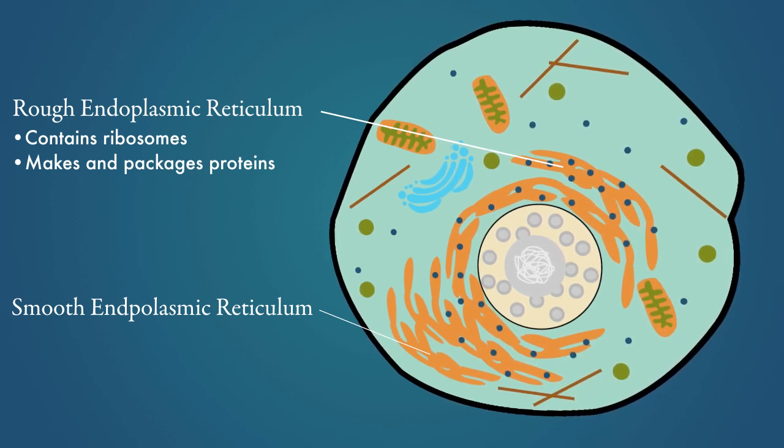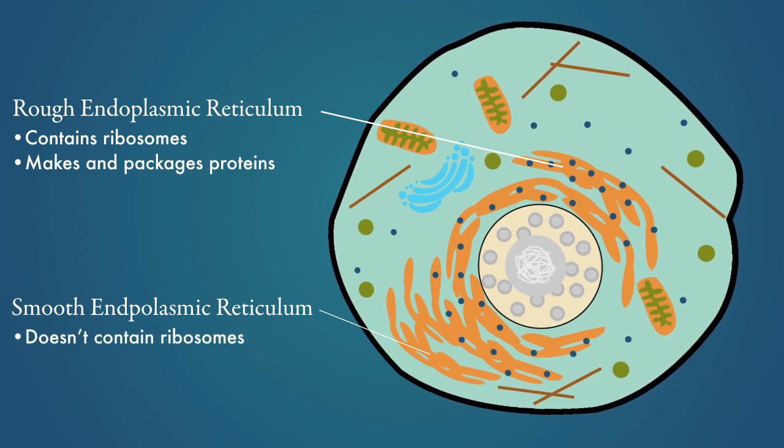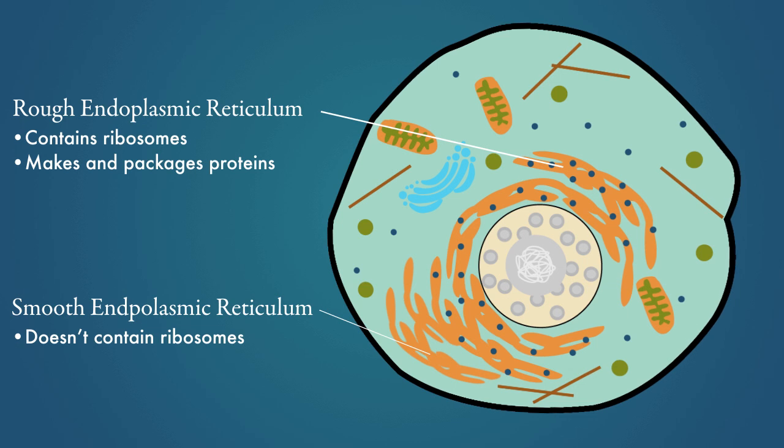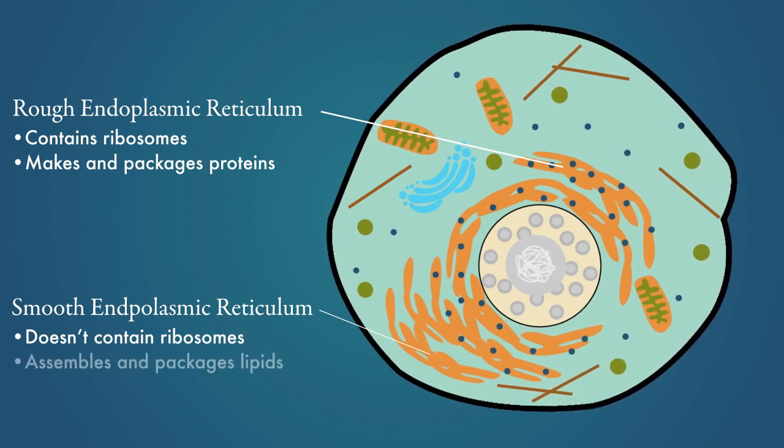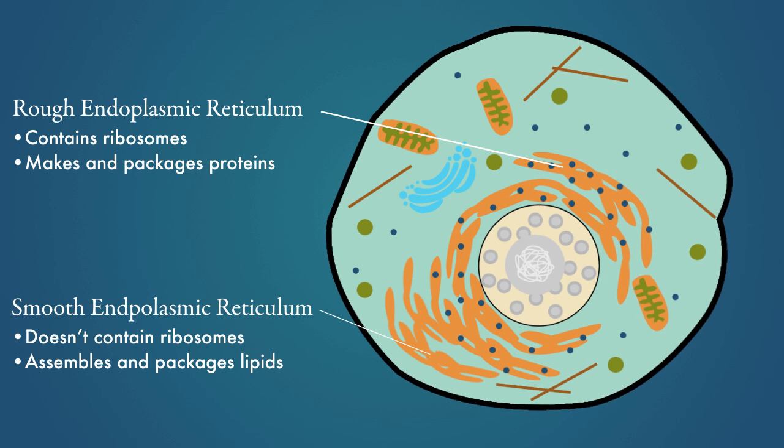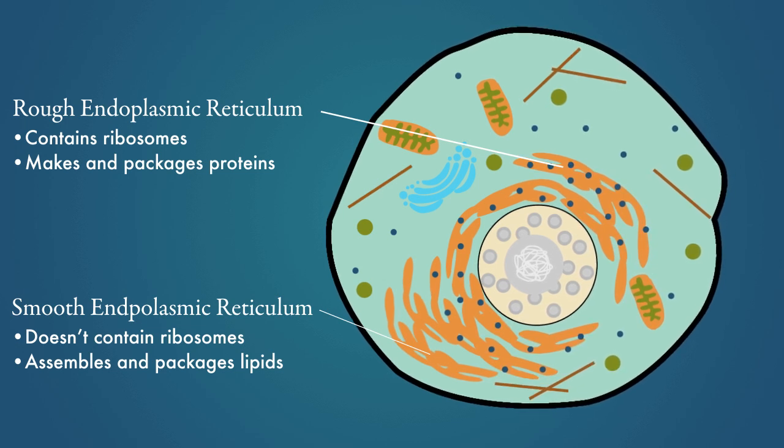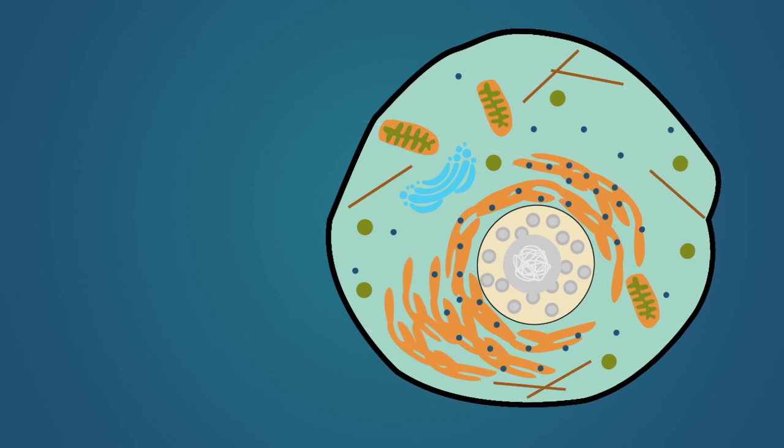The smooth endoplasmic reticulum is the portion of the endoplasmic reticulum that does not have any ribosomes embedded in the membrane. The smooth ER is mostly responsible for assembling and packaging lipids to be used by the cell or exported outside of the cell.